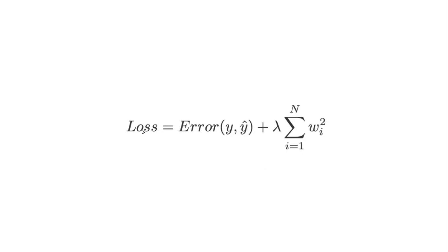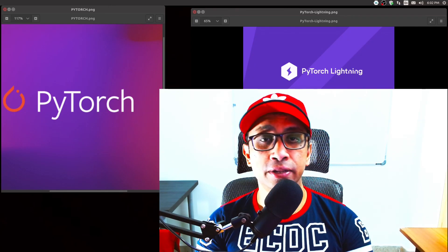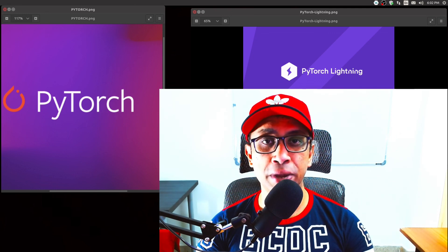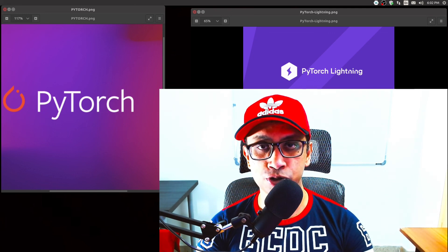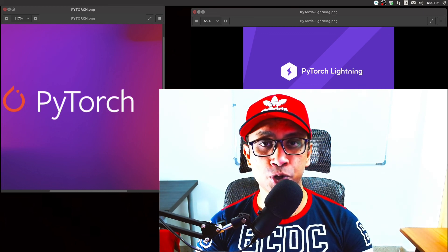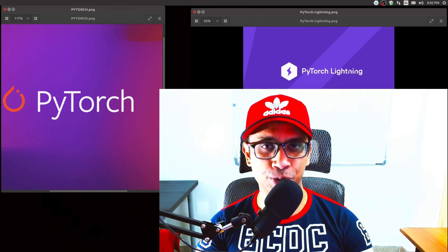This demonstrates how weight decay keeps weights small and avoids exploding gradients — the SGD algorithm reduces the entire right-hand side of the loss expression, and with λ applied, reducing the weights reduces the loss. That pretty much wraps up this video. Over the coming days I will do many such videos on common techniques and tips for PyTorch in deep learning projects — do subscribe and smash the like button. Thank you for watching, see you in the next one.